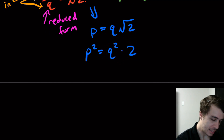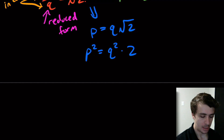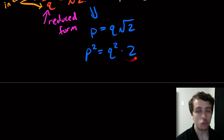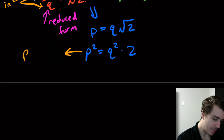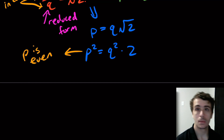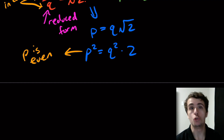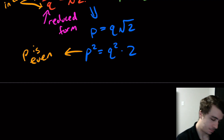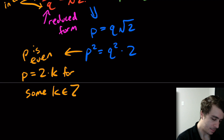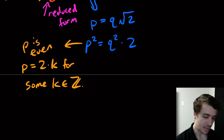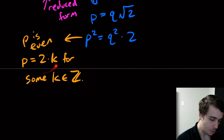So what does that tell us? Well, this tells us that p squared must be even, because q is an integer, squaring it is still an integer, and multiplying by two makes it even. So p squared is even, which implies p is even. Therefore p equals two times k for some integer k.